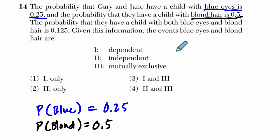The probability that they have a child with both blue eyes and blonde hair is 0.125. Given this information, the events blue eyes and blonde hair are what? Dependent, independent, or mutually exclusive.